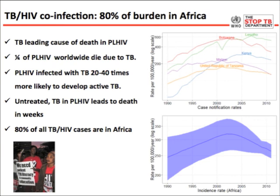TB is the leading cause of death in people living with HIV. One quarter of people living with HIV worldwide die due to tuberculosis. A person with HIV who is latently infected with tuberculosis has up to 40 times more chance than a non-HIV-infected person to develop active tuberculosis. Untreated, it leads to death. 80% of the cases are in Africa, and another 9% to 10% are in India.